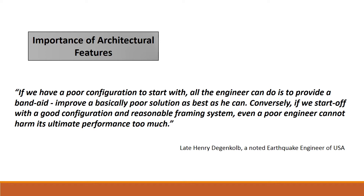The architectural features discussed in the last lecture were mostly related to the regular features of symmetricity. These regular features were shown to have greater earthquake resistance. They also led to lesser amount of torsion, lesser amount of mass eccentricity and lesser amount of stiffness eccentricity within the structure. There is a famous quote: if we have a poor configuration to start with, all the engineer can do is provide a band-aid, improving a basically poor solution as best as he can. Conversely, if we start off with a good configuration and a reasonable framing system, even a poor engineer cannot harm its ultimate performance too much.